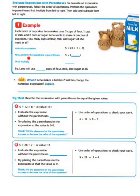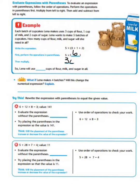First, perform the operations in parentheses: 3 plus 1 plus 2. We know 3 plus 1 is 4, plus 2 more equals 6. Then multiply: 5 times 6 equals 30. So Lena will use 30 cups of flour, milk, and sugar in all.